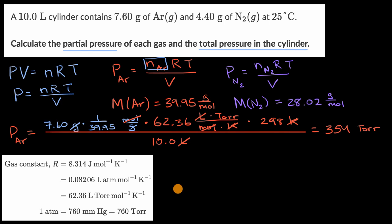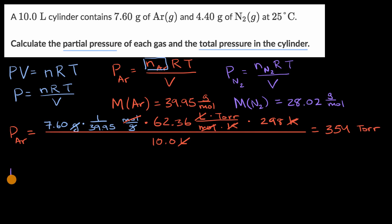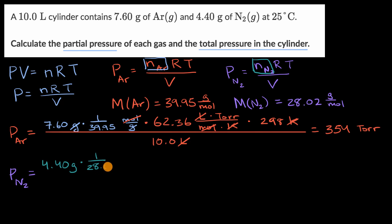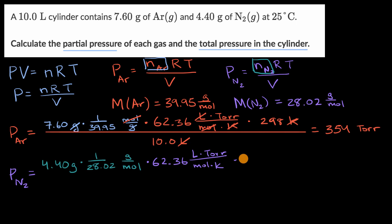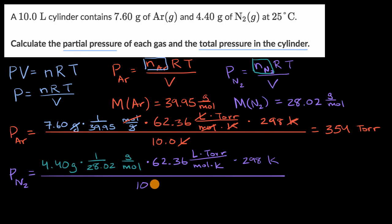Now we do the same thing for molecular nitrogen. The partial pressure of molecular nitrogen equals the mass of molecular nitrogen — 4.40 grams — times one over the molar mass, which is one over 28.02 grams per mole, times 62.36 liter·torr per mole·kelvin, times 298 kelvin, all divided by 10.0 liters.